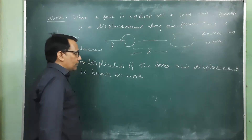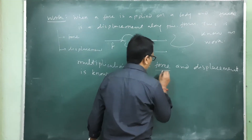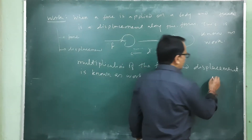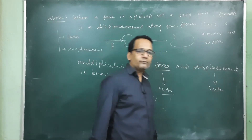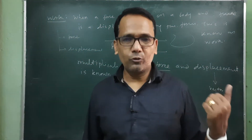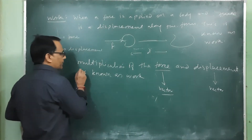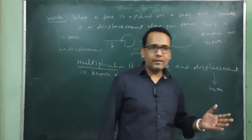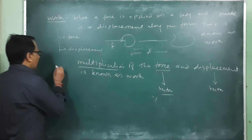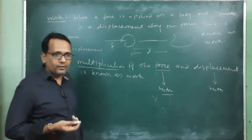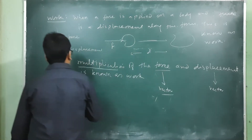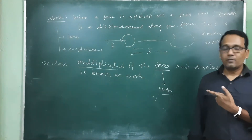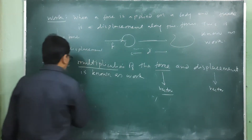One important thing to note: force is a vector quantity, and displacement is also a vector quantity — both are vector quantities. So simply saying 'multiplication of force and displacement' is not sufficient, because for vector quantities we have two types of multiplication: scalar (dot) product and vector (cross) product. In the case of work, we take the scalar multiplication — the dot product — of force and displacement.